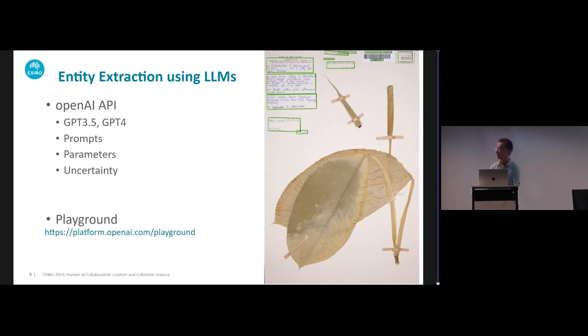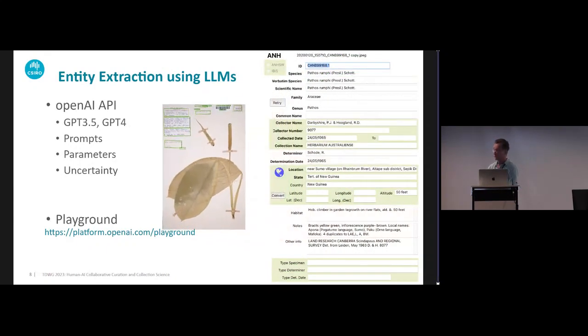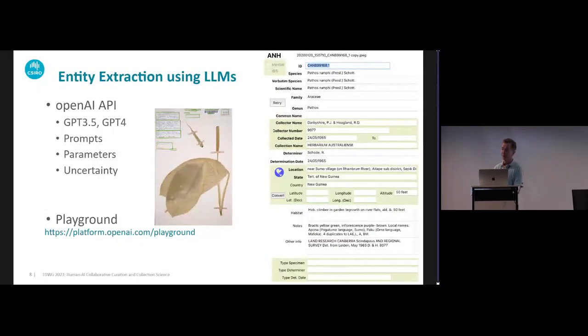After OCR, we then need to extract the entities from each image so that these can ultimately be put into your collection database. At the moment we're using large language GPT models from OpenAI as they supply an API for easy programmatic use with good performance. This enables us to more easily extract a larger range of metadata from specimens, including species names, collectors, determiners, dates, lat-longs and other location information, as well as more complex data such as localities, habitat, and notes of various sorts.